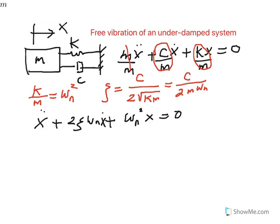What makes a system underdamped? The physical parameters — mass, spring constant, and damper — will determine if a system is underdamped. For that to be true, the damping ratio ζ must be between 0 and 1 (greater than 0, but less than 1). That means your system is underdamped.